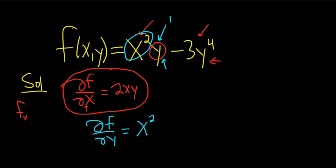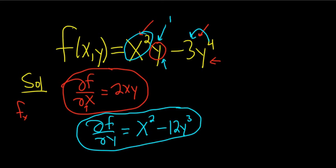Here there's no x's, so we just take the derivative with respect to y. 4 times 3 is 12, and then you subtract 1, so 4 minus 1 is 3. That's it.